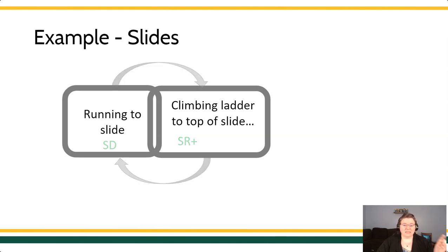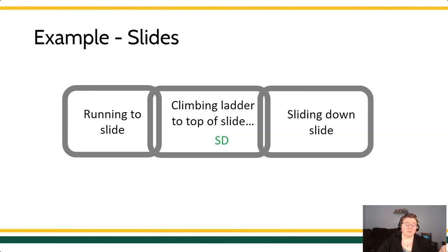It said that in the presence of this, then you will be able to emit the response and contact reinforcement. So starting to climb the ladder reinforces approaching the slide, and running to the slide sets the occasion for climbing the ladder. Now, on the next step of this, climbing the ladder is the discriminative stimulus. It's the thing that you do to make the opportunity for the next behavior, sliding down, possible. Sliding down the slide is the reinforcer for climbing up the ladder, and then the whole thing starts up again. You're at the bottom of the slide, which sets the occasion for you to run around back to the ladder, and then you begin the process over again.